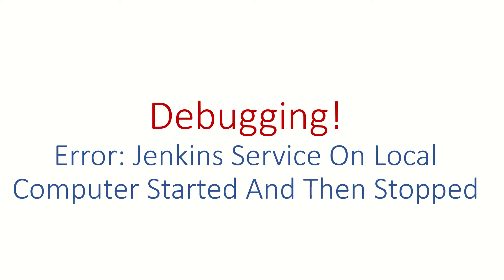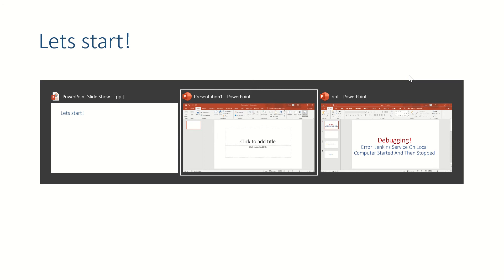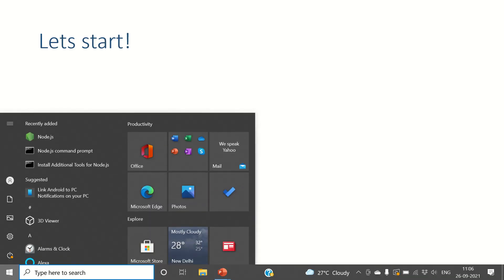Hi guys, welcome back. In this video we are going to debug a Jenkins error. This is an ad hoc session — I was getting this error so I thought I'll debug with you. We'll debug the Jenkins error if you are not able to start the Jenkins service on a Windows machine and you're getting the error 'Jenkins service on local computer started and then stopped.' The root cause of the error might be different for me and you, but I'm telling you the way to debug this.